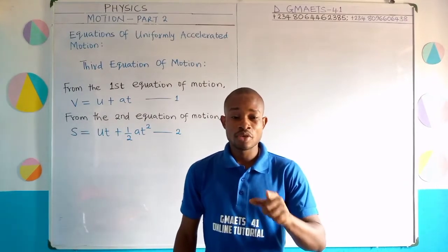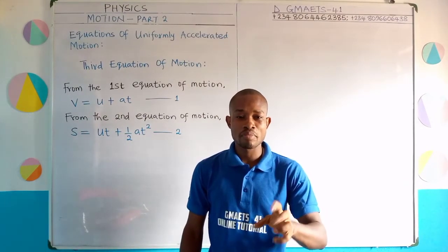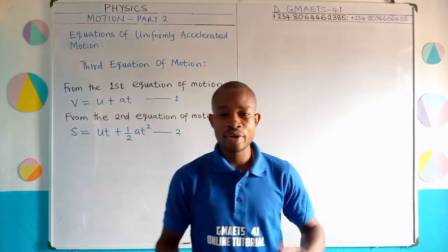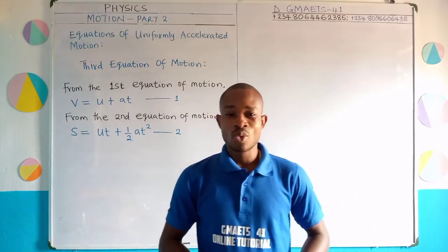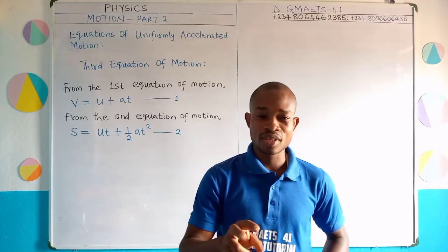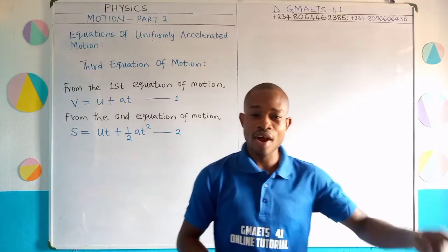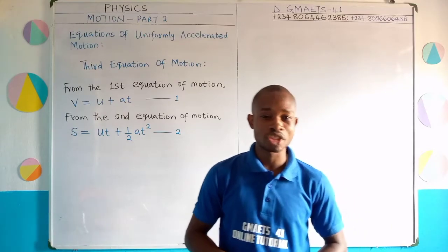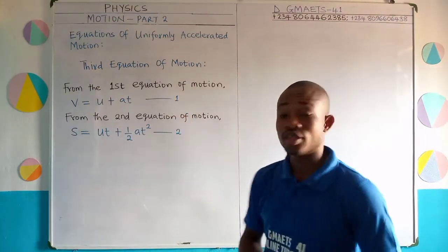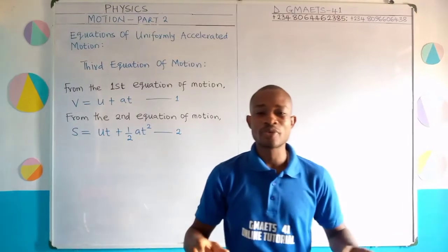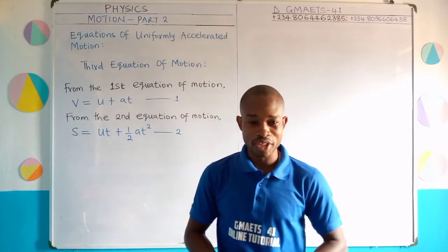We are going to derive the third equation of motion. We've already established the first and the second equation of motion, and we shall use the knowledge of these to derive the third. Here on the board I have the first and second equation of motion. So how do we proceed to get the third equation of motion from these two equations?